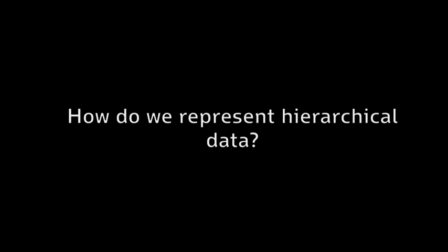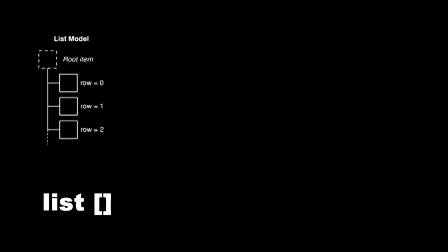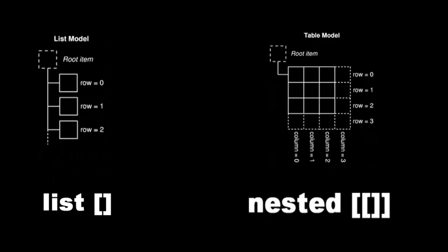So before discussing and implementing the tree model itself, we need a way to represent our data. We used a list to store and hold items we wanted to display in a list model in a previous tutorial. We used a nested list to store and hold items we wanted to display in a table model, again in a previous tutorial.